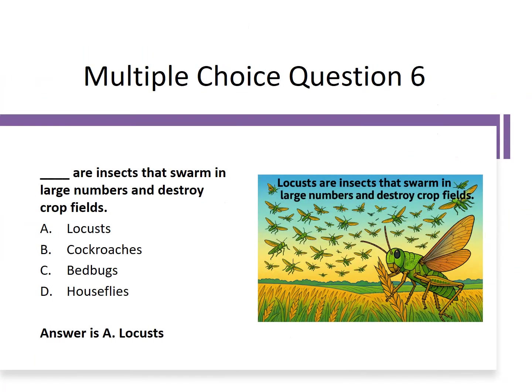Locusts are insects that swarm in large numbers and destroy crop fields. The answer is A: locusts.